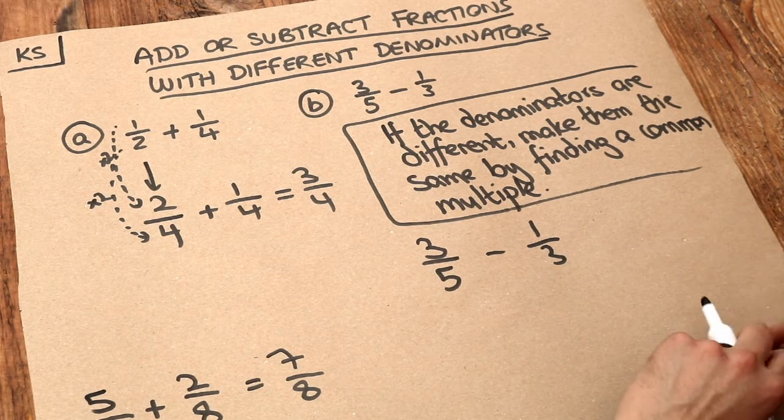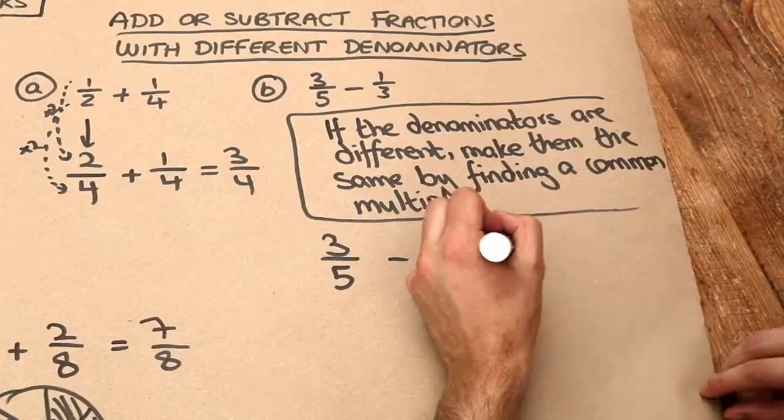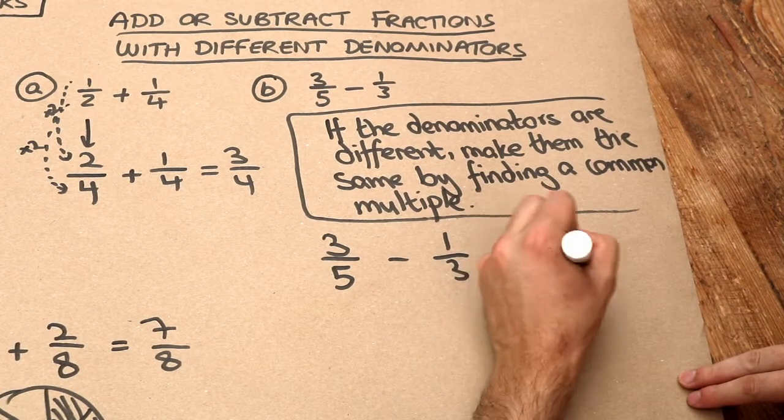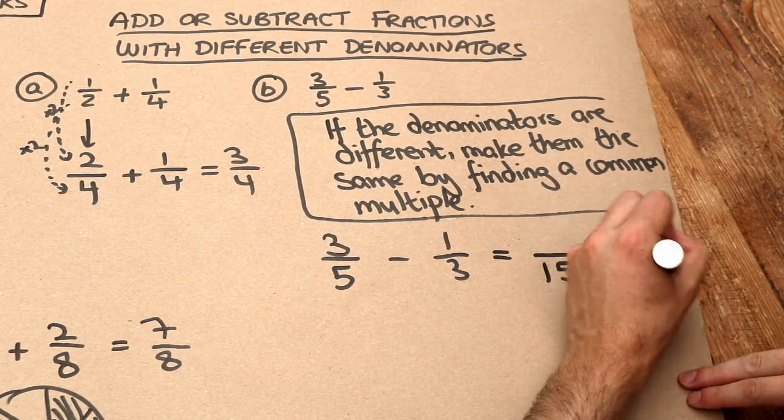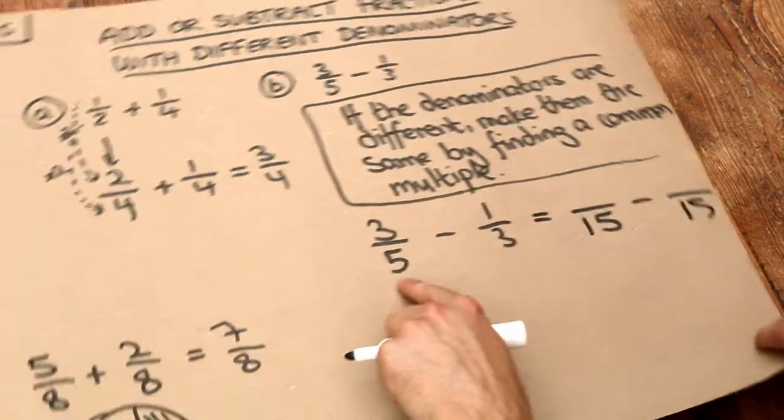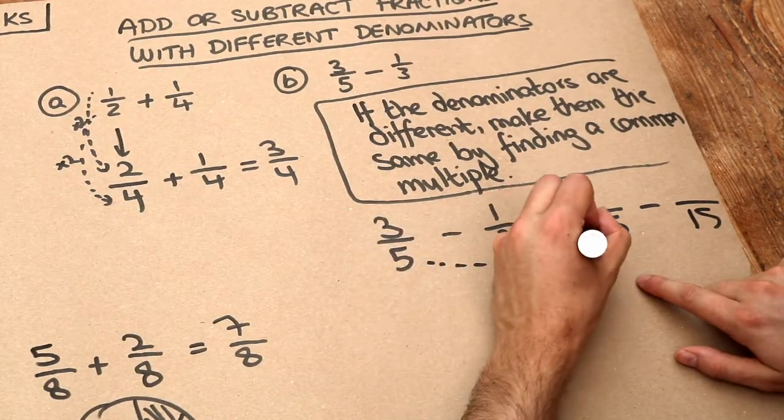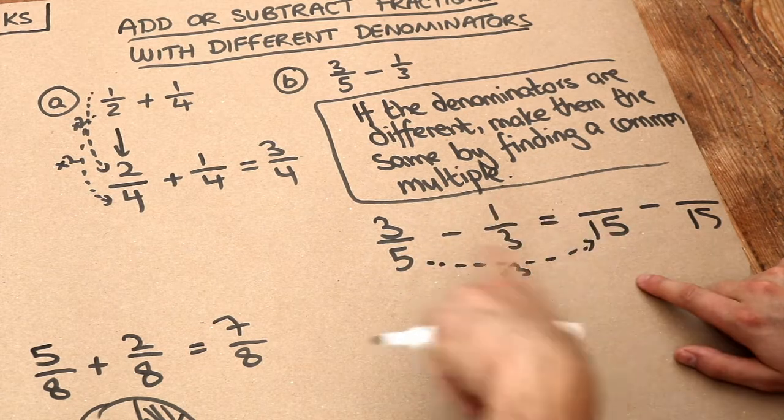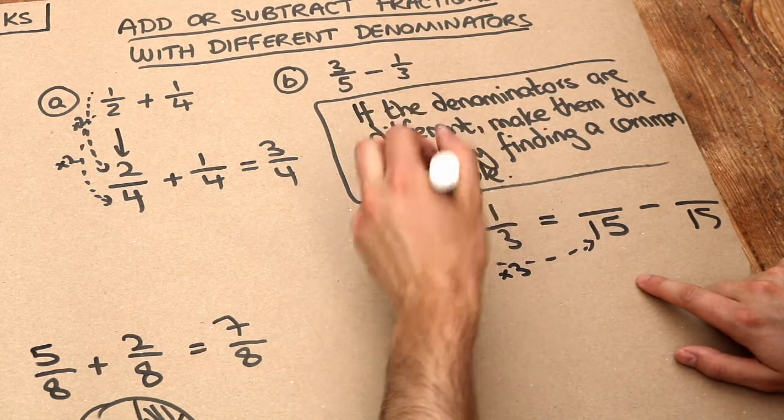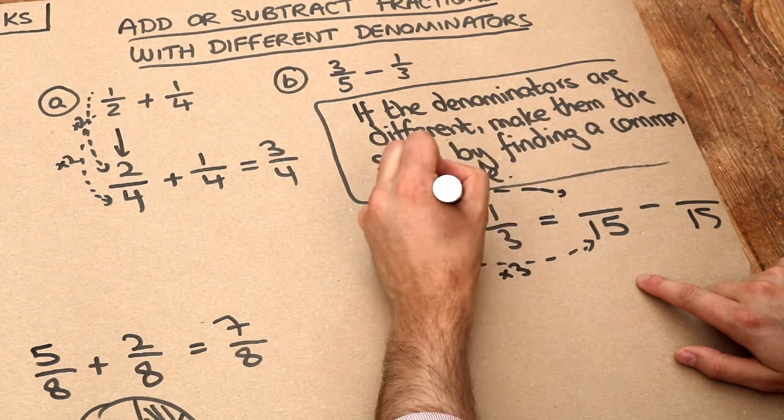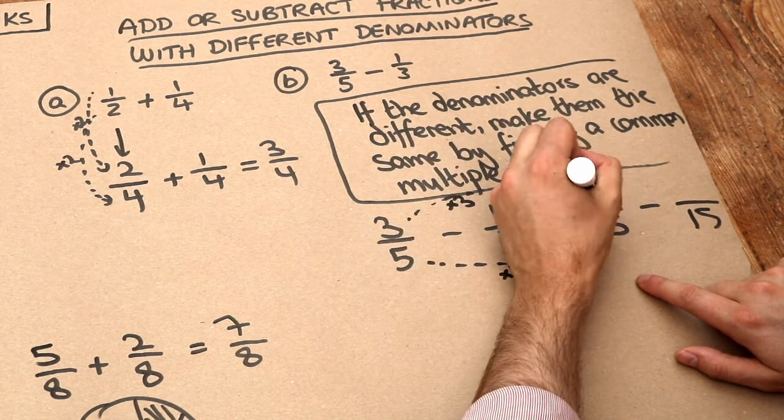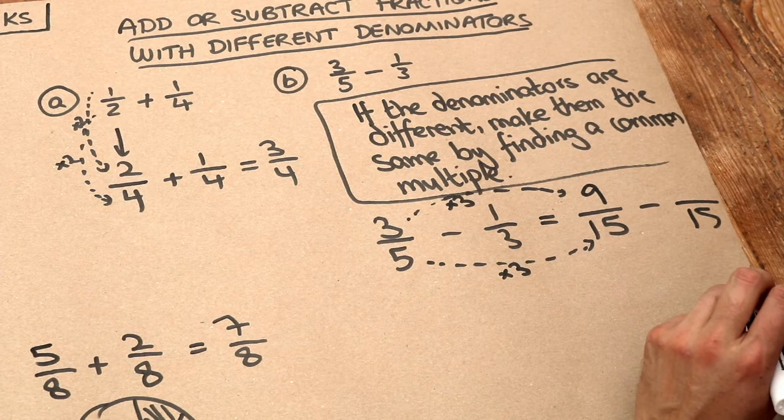Well 5 and 3 both go into 15. So we can make each of these over 15. We're going to have to change both of them this time. Now what do we have to times the 5 by to get to the 15? Well that got 3 times bigger. And therefore because whatever you do to the bottom you have to do the same to the top, we have to times the top by 3 as well. 3 times 3 is 9. So 3/5 is the same as 9/15.